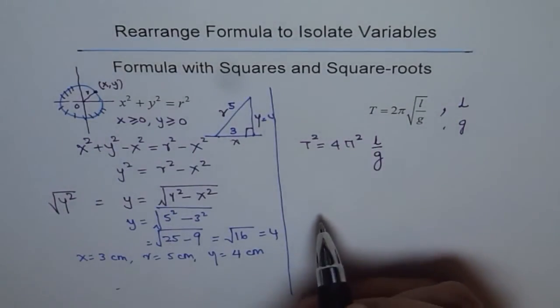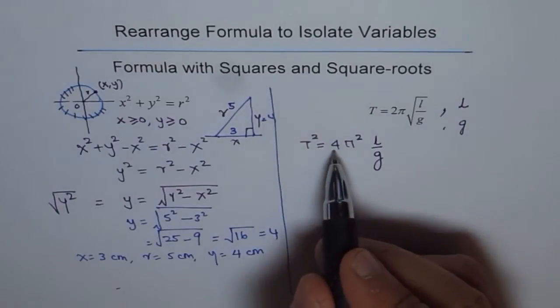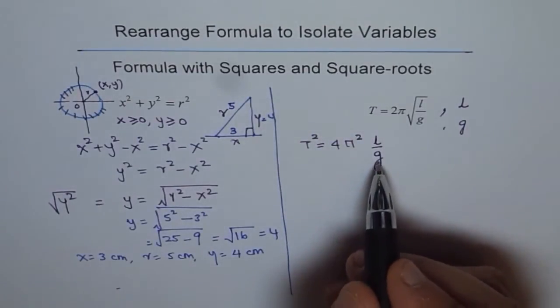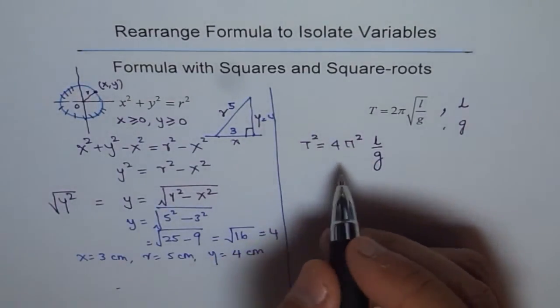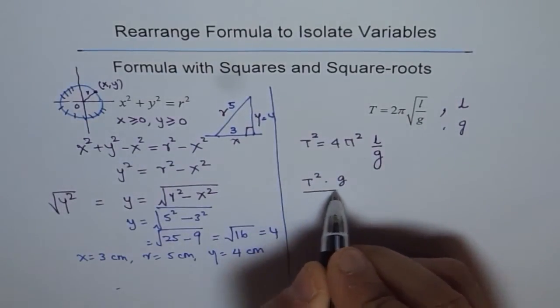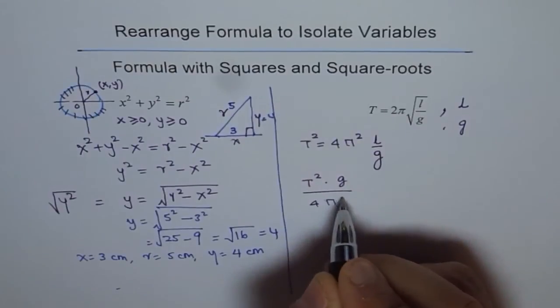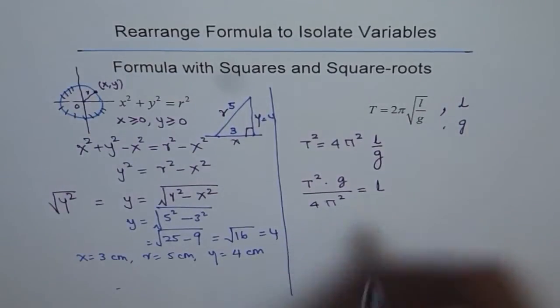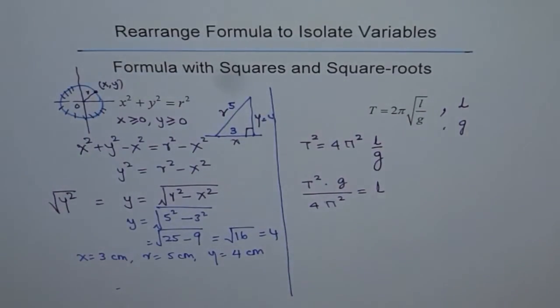Now to find l, we are going to divide by 4π² and multiply by g. So we get T²g/(4π²), and that gives us the value of l. That is how we find l from this formula—the length.